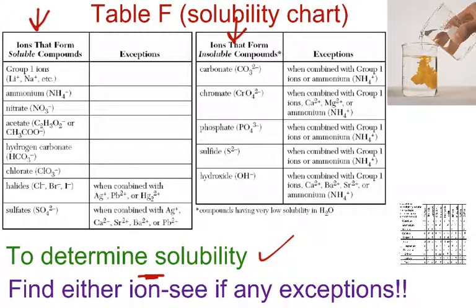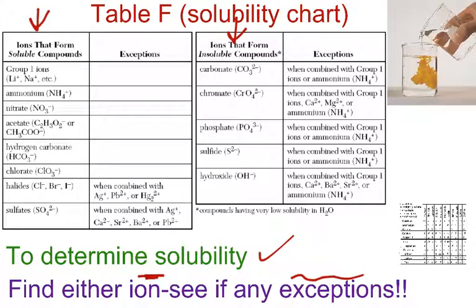You don't look for the whole compound in the particular columns. For example, if they give you potassium chloride or whatever, you don't look for potassium chloride — you look for either potassium or chloride. And very important: you must check if there are any exceptions, because if there's an exception, it will flip the original answer around.